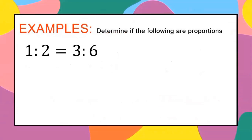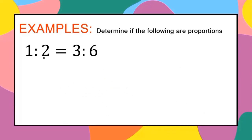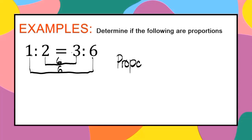To further understand this, let us identify whether the following are proportional. Example: 1 is to 2 equals 3 is to 6. We can only say a given is proportional if the product of the means equals the product of the extremes. Here, 2 times 3 is 6, and 1 times 6 is also 6. The products are equal, therefore this is a proportion.